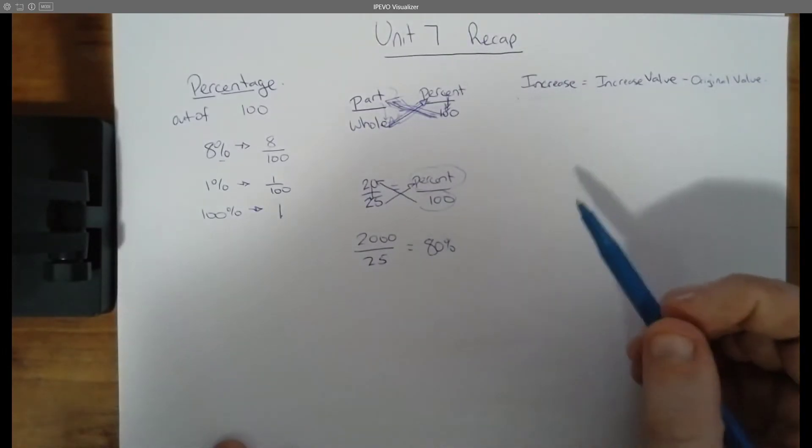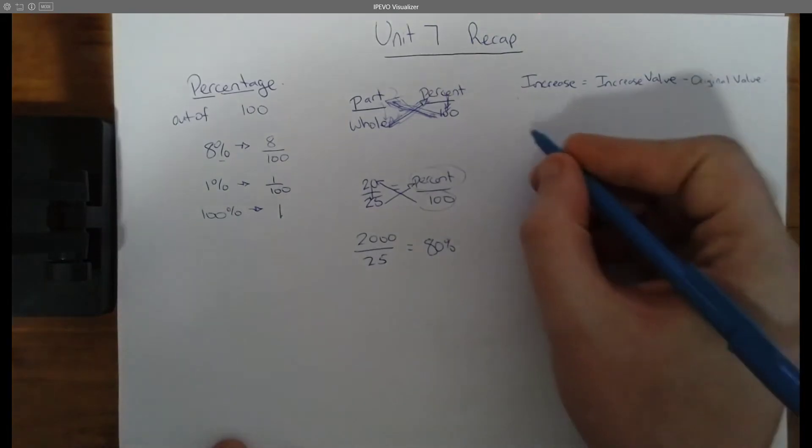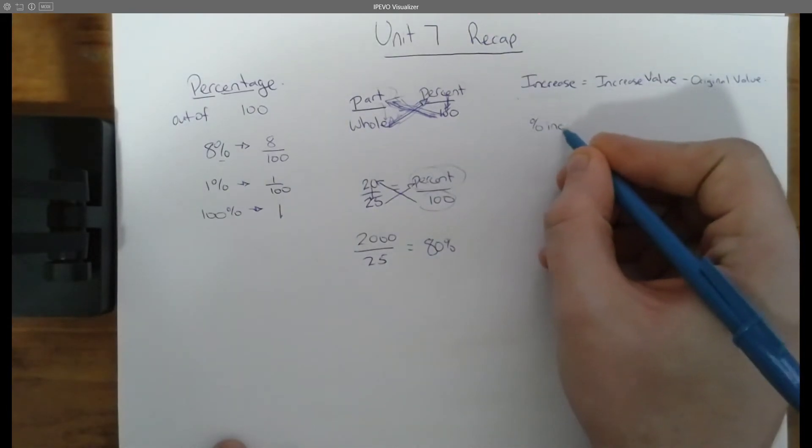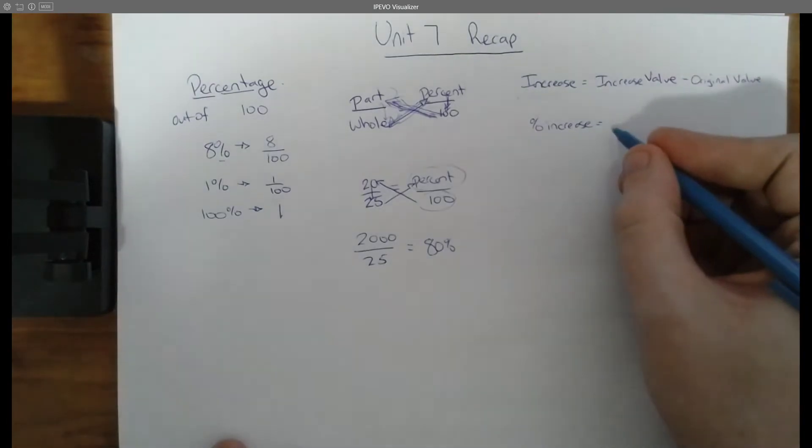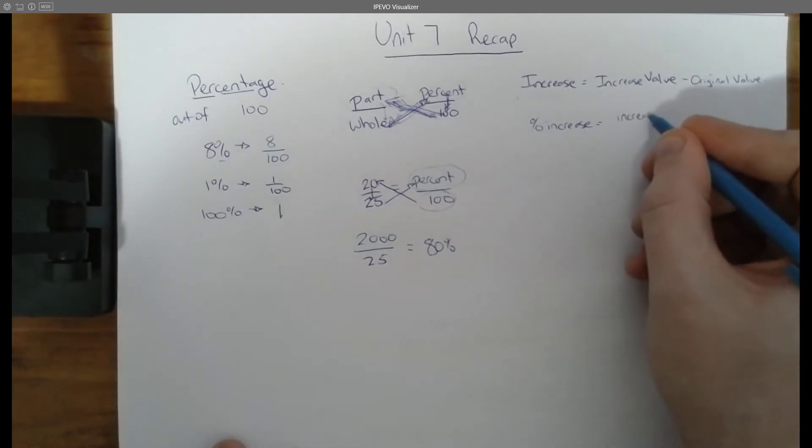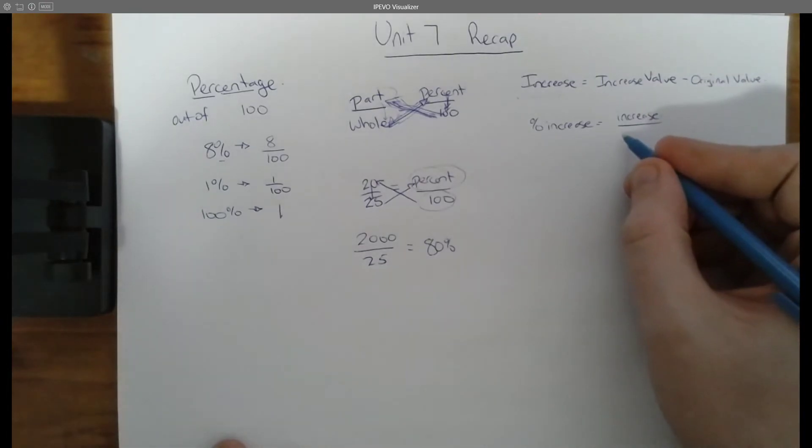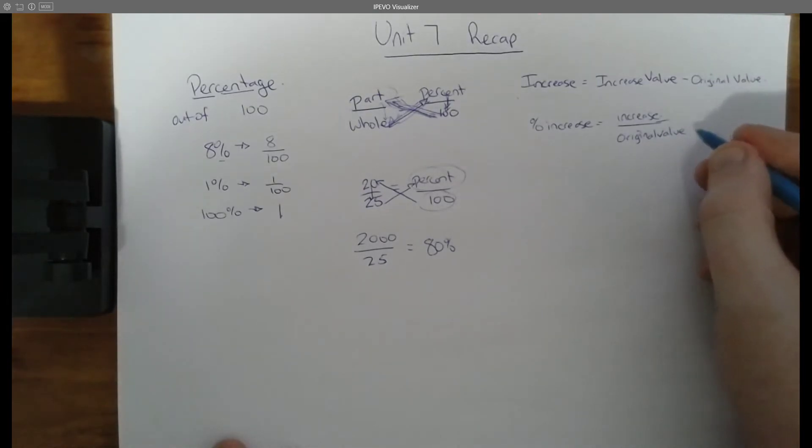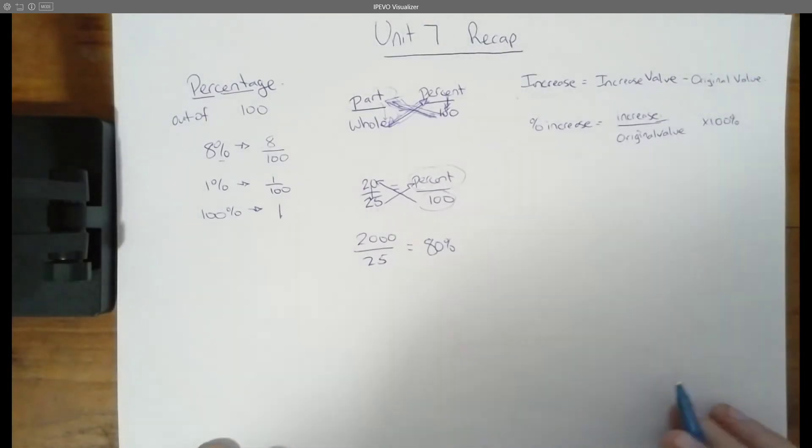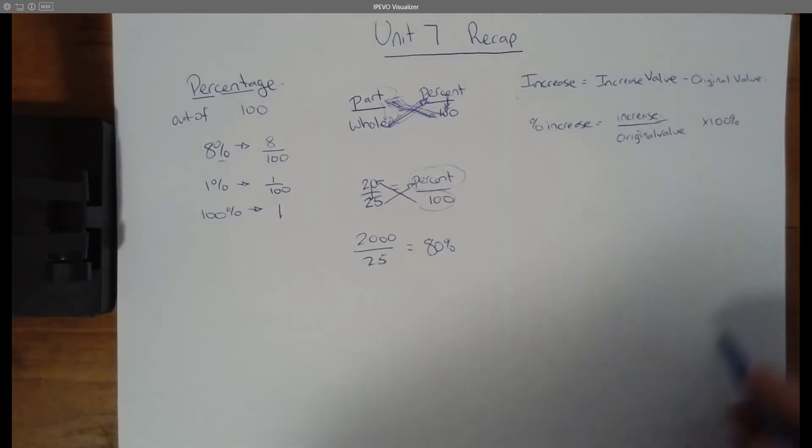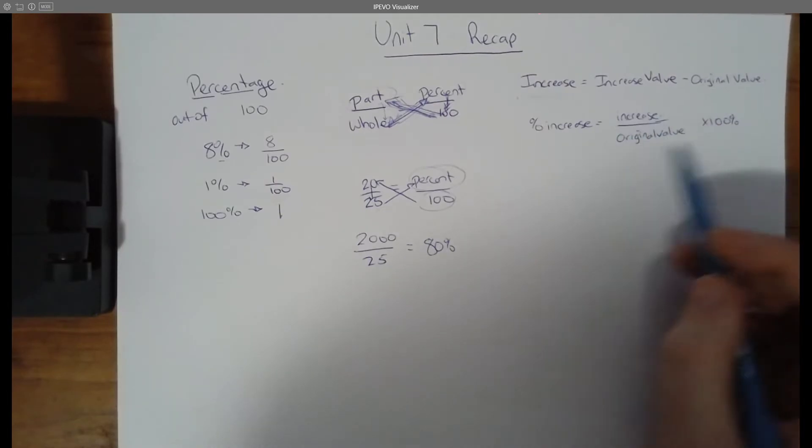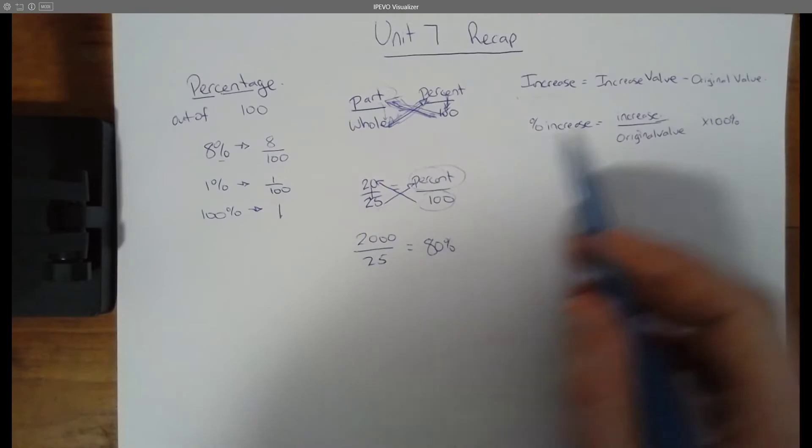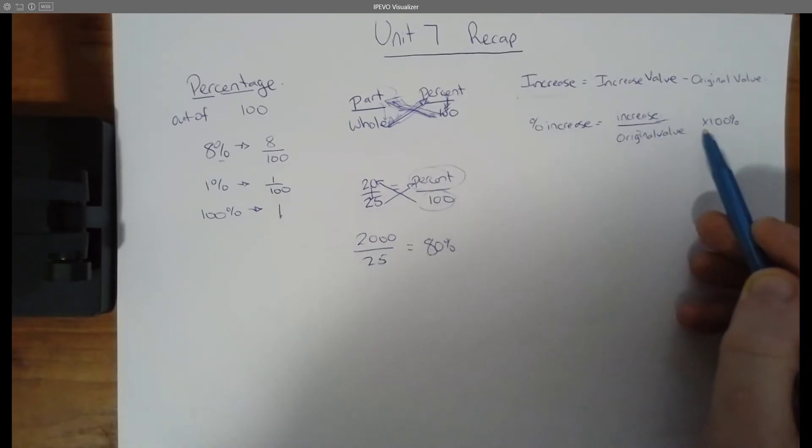We can then use that information to figure out a percentage increase. So percent increase equals our increase, what we just figured out, in this case, the $10, divided by the original value, in this case, $20. And then we're going to times that by 100% to give us that as a percentage.